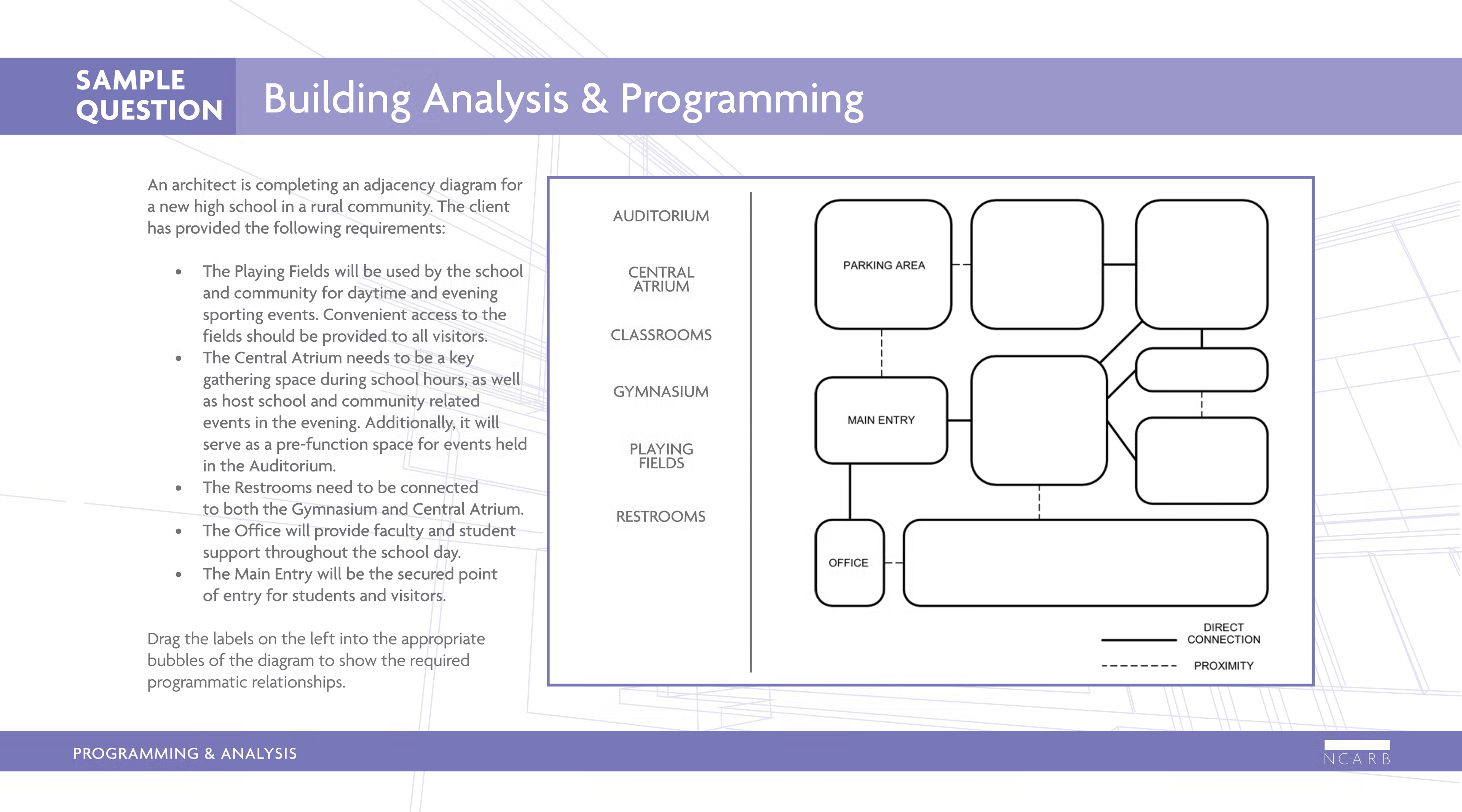Additionally, it will serve as a pre-function space for events held in the auditorium. The restrooms need to be connected to both the gymnasium and central atrium. The office will provide faculty and student support throughout the school day. The main entry will be the secured point of entry for students and visitors. Drag the labels on the left into the appropriate bubbles of the diagram to show the required programmatic relationships.